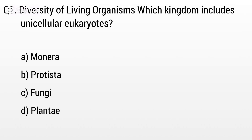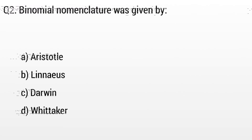Question 1. Diversity of living organisms: which kingdom includes unicellular eukaryotes? Option A: Monera, B: Protista, C: Fungi, D: Plantia. The right answer is option B, Protista.